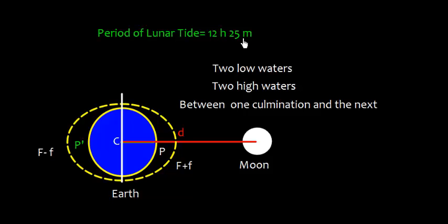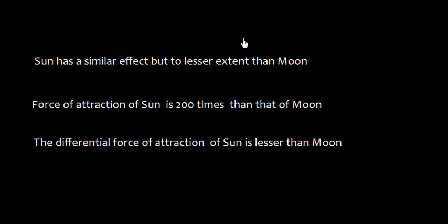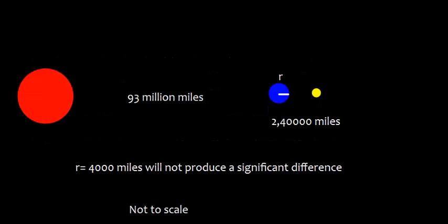The sun has a similar effect but to a lesser extent than moon. The forces of attraction of sun is 200 times than that of moon, but the differential force of attraction of sun is lesser than the moon. The distance between earth and sun is approximately 93 million miles, and the distance between earth and moon is 2,40,000 miles. So if we compare this ratio, then the radius which is 4,000 miles will not produce a significant difference. While this diagram is not to scale, it's trying to convey the fact.